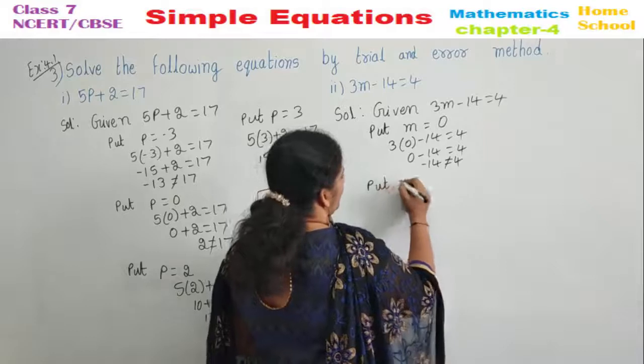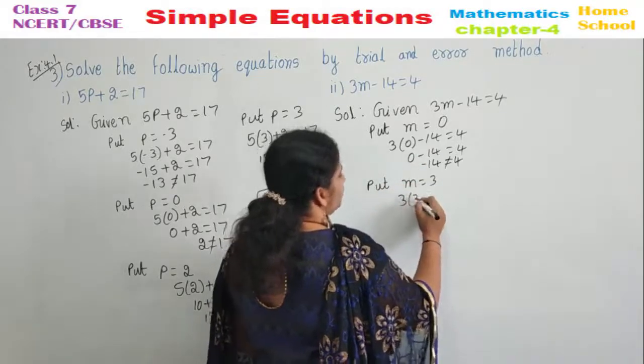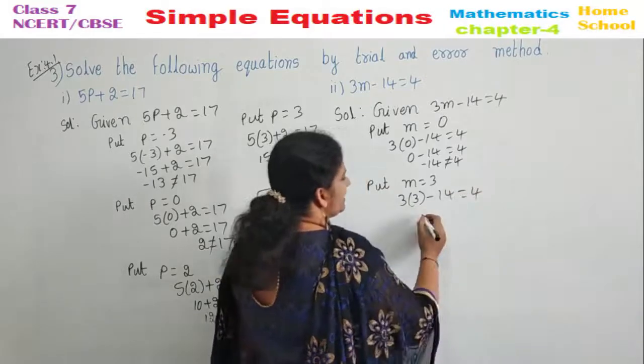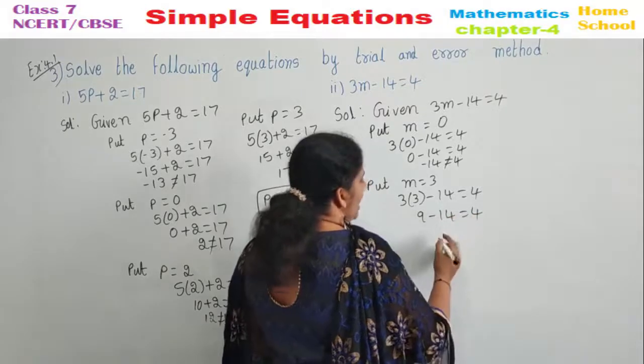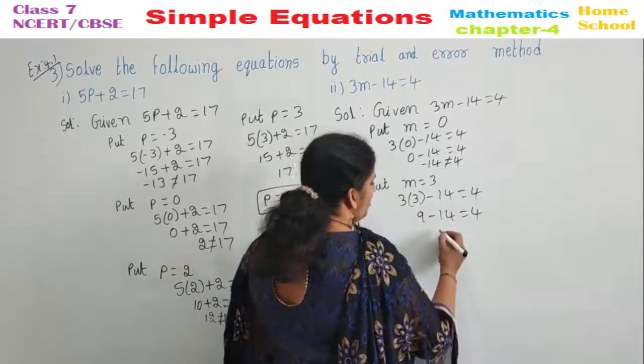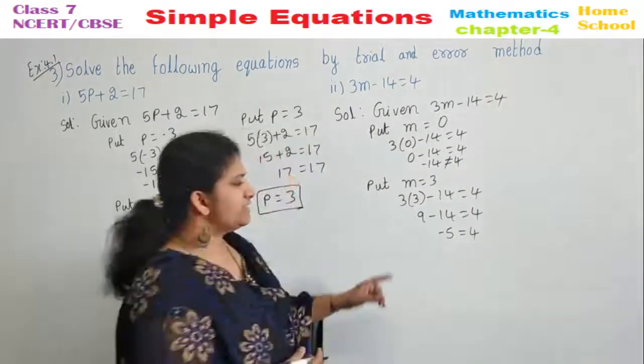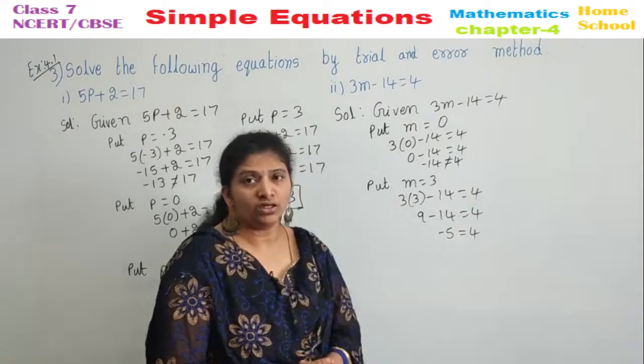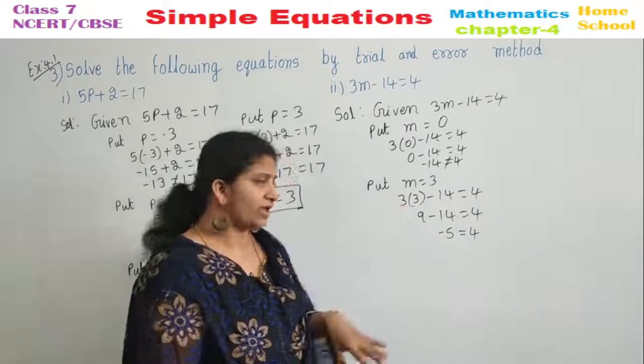Put M is equal to 3. 3 into 3 minus 14 equal to 4. 3, 3 is 9 minus 14 equal to 4. 9 minus 14 will be minus 5 is equal to 4. Is minus 5 and 4 nearer? No, it is not nearer. So, what we need to do? We take a little higher number.